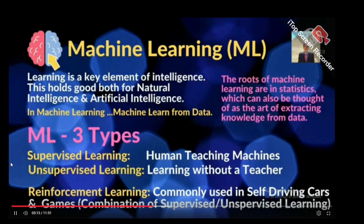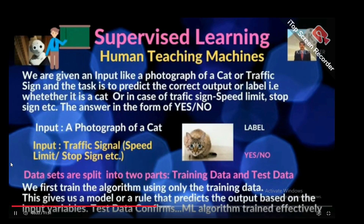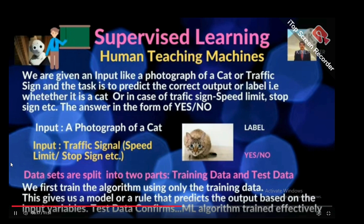In Supervised Learning, it is like a teacher teaching a student, where the student is the computer or machine. For example, given a photograph of a cat, the task is to predict the correct output or label — whether it is a cat or not. We feed many photographs to the machine, and through data processing and image processing, it recognizes whether it is a cat or not.